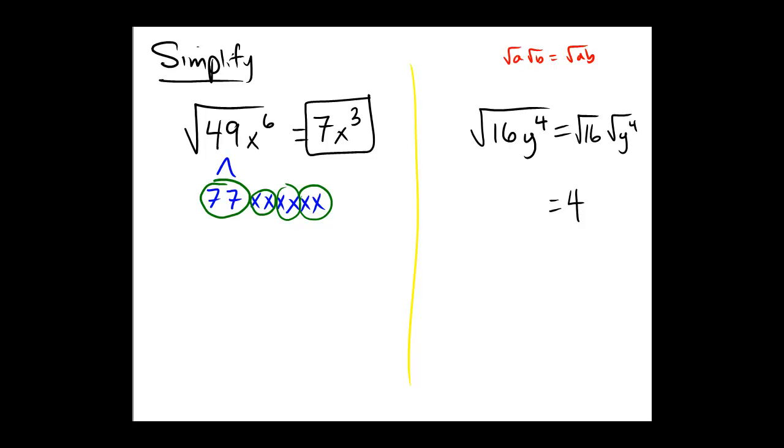So in other words, we take half as many copies of y and write those down. And we get an answer of 4y squared. So notice that's shorter than writing out all the copies like we did over here. But it's consistent because half of 6 is 3. So we end up getting the result that we want.